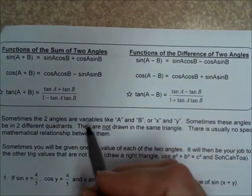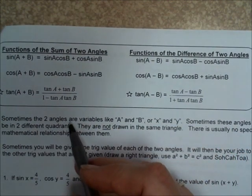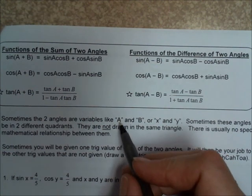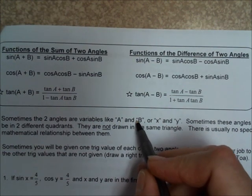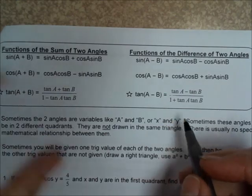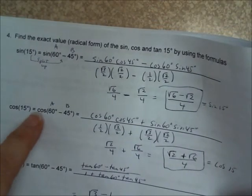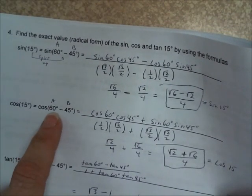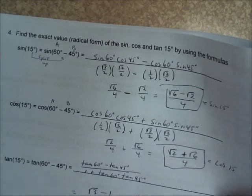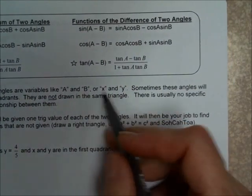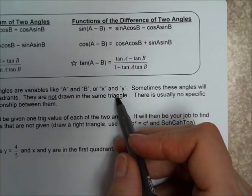What we're going to do today is talk about angles that are variables, like A and B and X and Y, instead of numbers. The day before, we talked about all of these angles being numbers, like 60, 45, or 135. But now we're going to talk about them as variables.